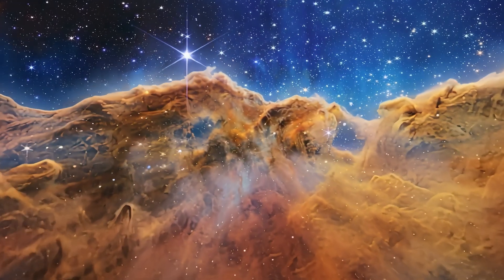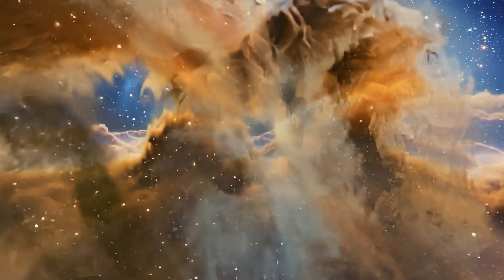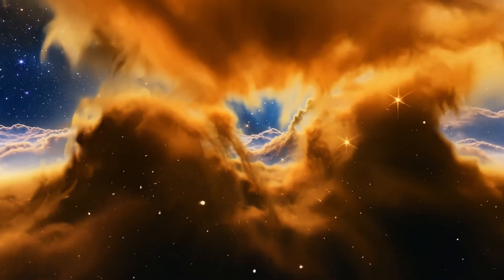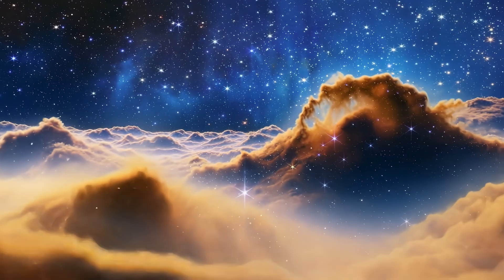The cosmic cliffs rise seven light years high at the edge of NGC 3324. They give way to a dense cloud of gas and dust shaped by ultraviolet radiation and stellar winds within the Carina Nebula.